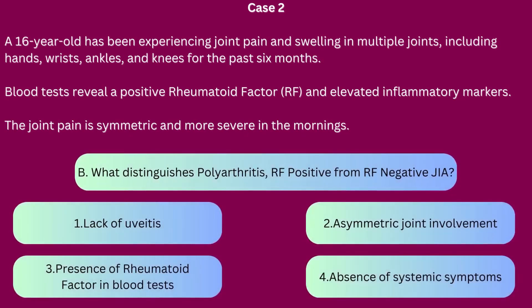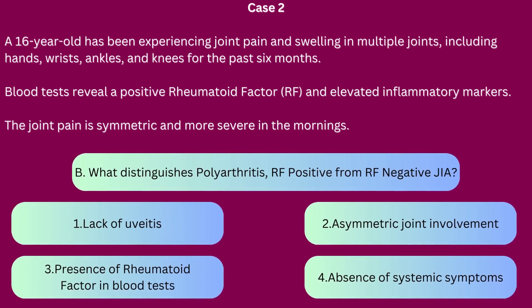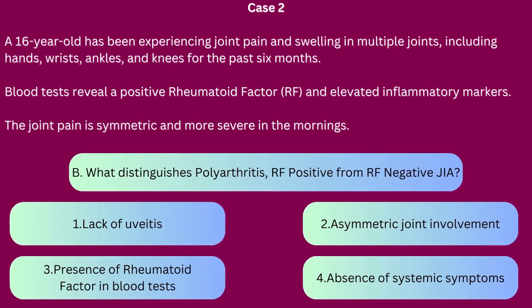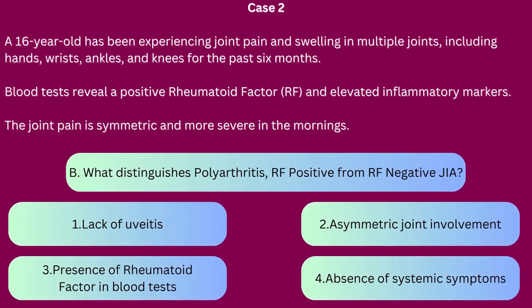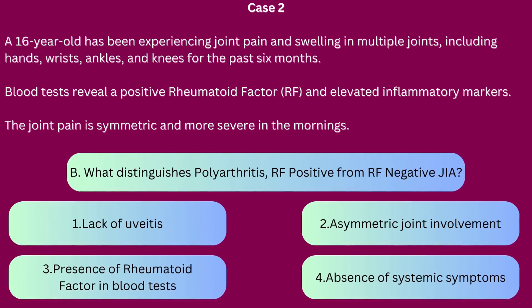Question B: What distinguishes polyarthritis rheumatoid factor positive from rheumatoid factor negative juvenile idiopathic arthritis? 1. Lack of uveitis. 2. Asymmetric joint involvement. 3. Presence of rheumatoid factor in blood test. 4. Absence of systemic symptoms.